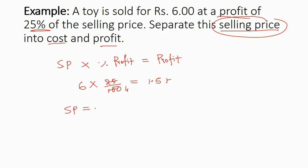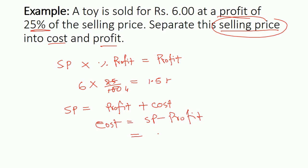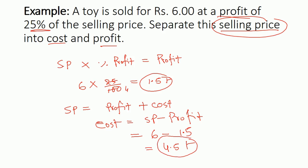We can write selling price equals profit plus cost. We need to find out the cost since we do not know it yet. So we rearrange: cost equals selling price minus profit. We know the selling price is 6 and we know the profit is 1.5. From here we get the cost price, which is 4.5. So the cost price of the article is 4.5 rupees and the profit is 1.5 rupees — it incurred a 25 percent profit.